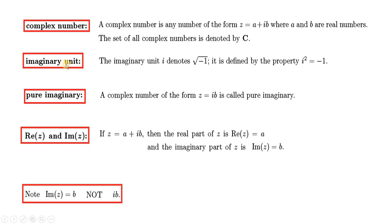Imaginary unit کو ہم i سے ظاہر کرتے ہیں اور i کا مطلب ہے √(−1)۔ جب ہم دونوں کو square کرتے ہیں تو i² = −1 ملتا ہے۔ A complex number of the form z = ib is called a pure imaginary number — یعنی جب a = 0 ہو۔